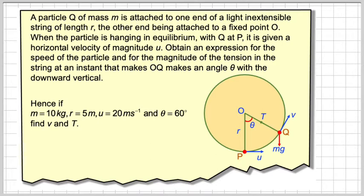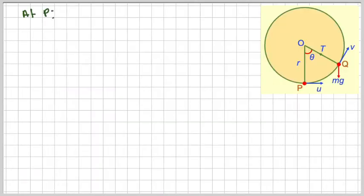In this case we were given a diagram. If not, you'd have to try and draw a diagram. So, using energy, we're going to measure the PE from this point here. At P, the kinetic energy at this point is half M U squared, and the potential energy is going to be zero.